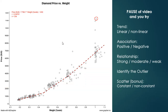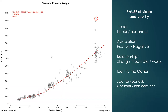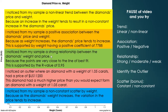Looking at the scatter: it starts off quite small when the weight is low, but as weight increases the scatter gets more. The variation in price starts off low when the weight is low, but as weight increases the variation increases. So this is a non-constant scatter — as weight increases, the variation tends to increase.